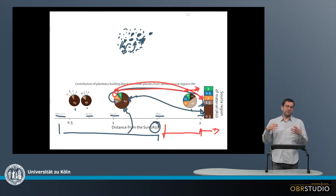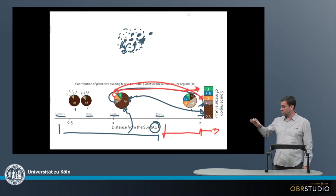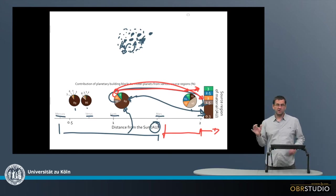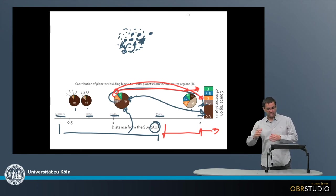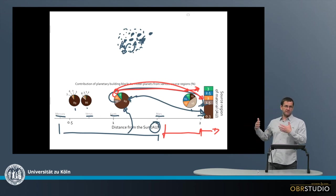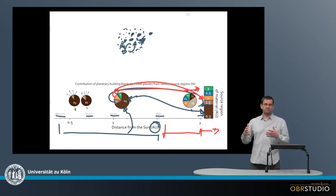So we can see that most of the material comes indeed, about two-thirds, from the region where this planet formed. This is also true more or less for the other three planets, while some other material comes from further out or a little bit further in, mostly from further out. And this is just a nice illustration where the material comes from, from which the planets formed.